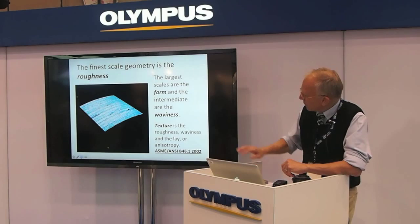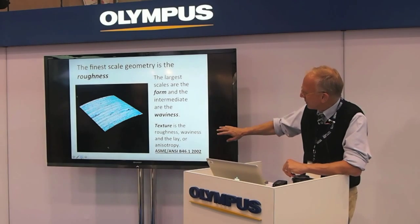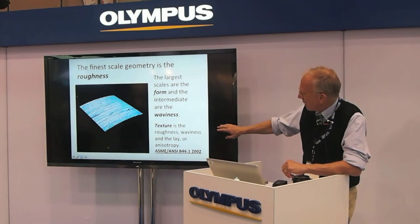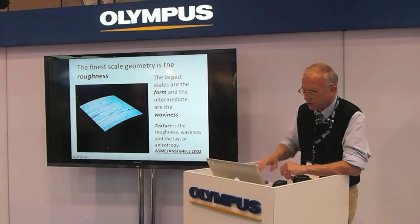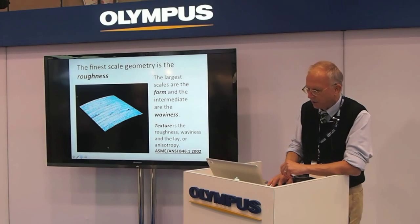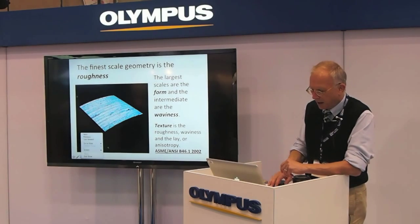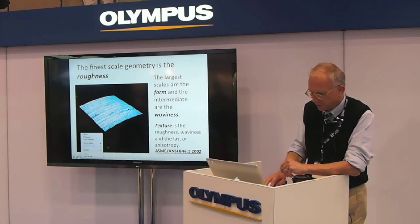When we talk about texture being roughness, waviness, and the lay — which is the directionality or anisotropy of the surface.